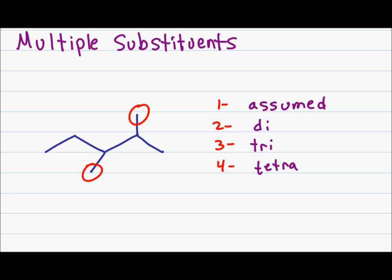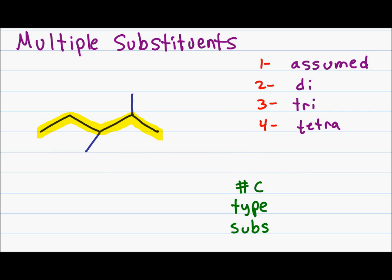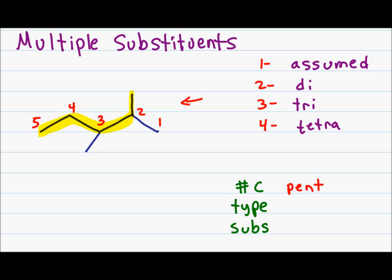Now let's apply this rule to name the molecule shown. My longest carbon chain is five carbons. I chose to highlight the most obvious, however you could have highlighted the chain another way because both give you five carbons in a row. If I start counting from the right I will hit my first substituent at carbon two; if I start from the left I hit it at carbon three, so I know to start from the right. Five carbons gives a first name of pent, and only single bonds so it's ane.